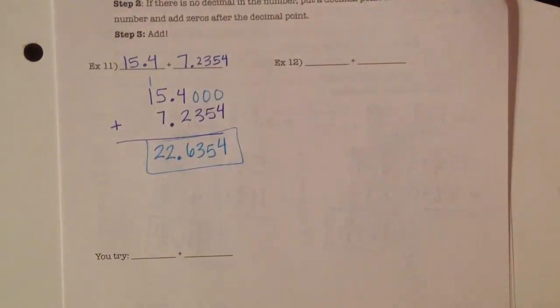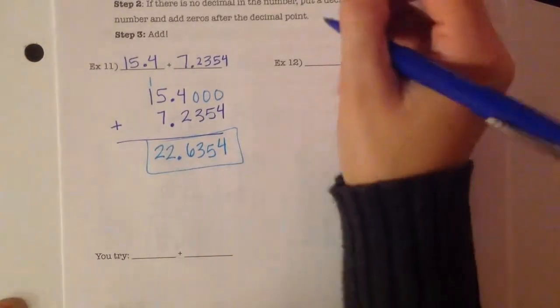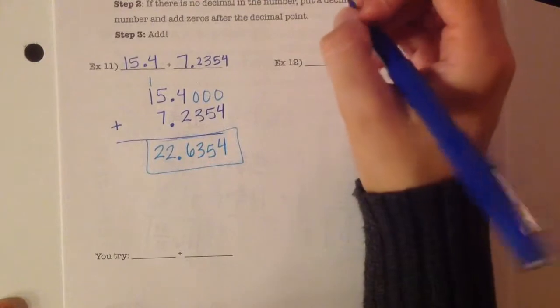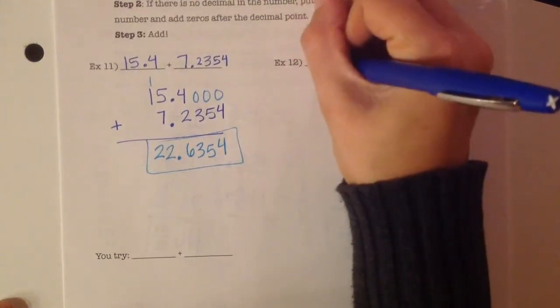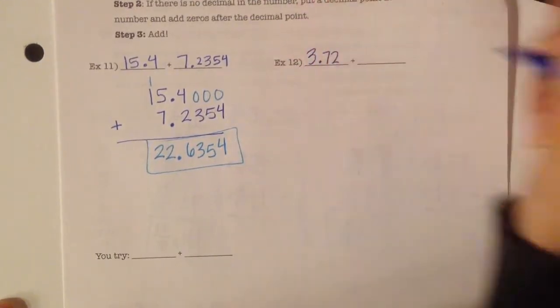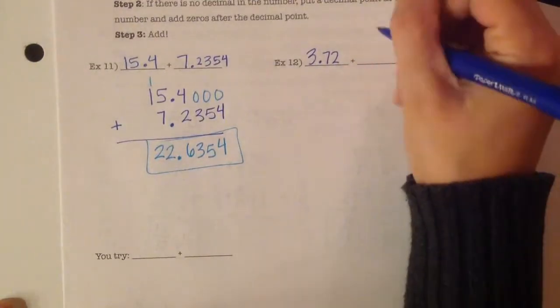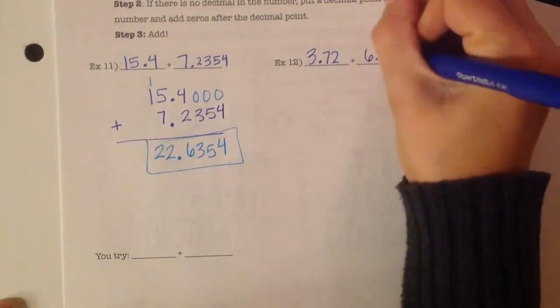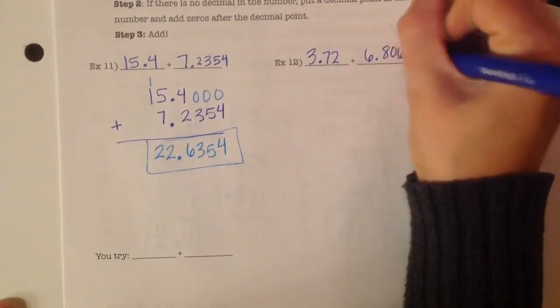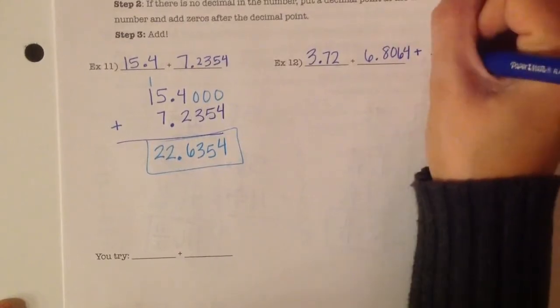So, look at example number 2. For example number 2, we've got 3 and 72 hundredths plus 6 and 8,064 ten thousandths plus 5.